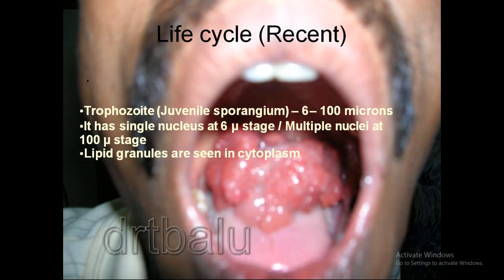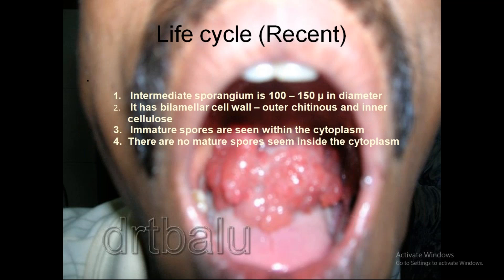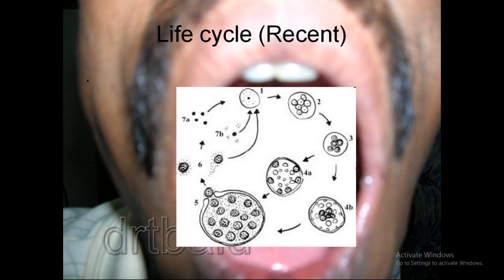The trophozoite is 6 to 100 microns in size. It has a single nucleus at the 6 micron stage or multiple nuclei at the 100 micron stage, with lipid granules seen in the cytoplasm. The intermediate sporangia is 100 to 150 microns in diameter, has a bilamellar cell wall with outer chitinous and inner cellulose layers, and contains immature spores within the cytoplasm but no mature spores. This completes the life cycle of Rhinosporidium.